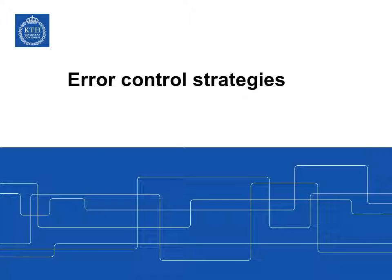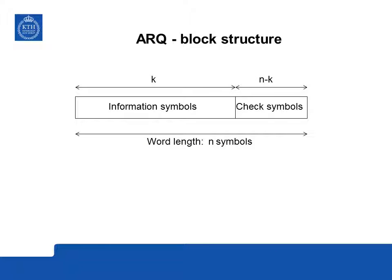Let's first look at the error control strategies — how to design checksums that allow us to detect errors. To detect errors we use a concept from Communications called block codes. Assume we have messages consisting of k information symbols. In a block code, we compute by algebraic means a number of check symbols — n minus k of them — so that together with the k information symbols we get a total transmitted message length of n symbols.